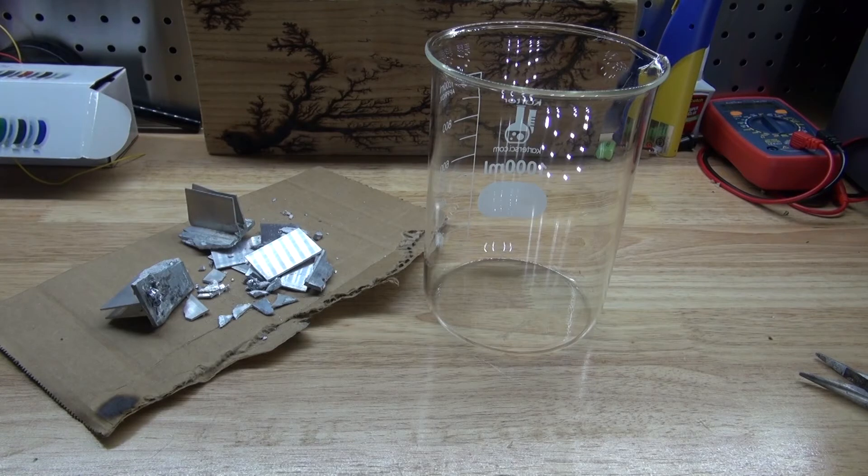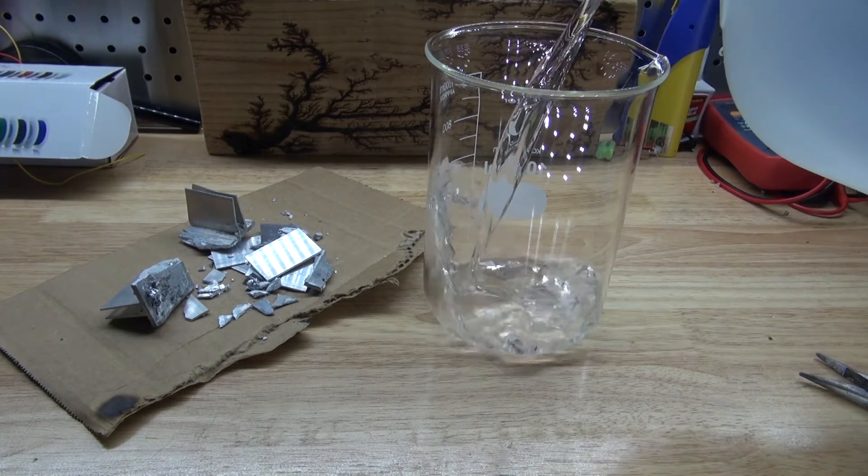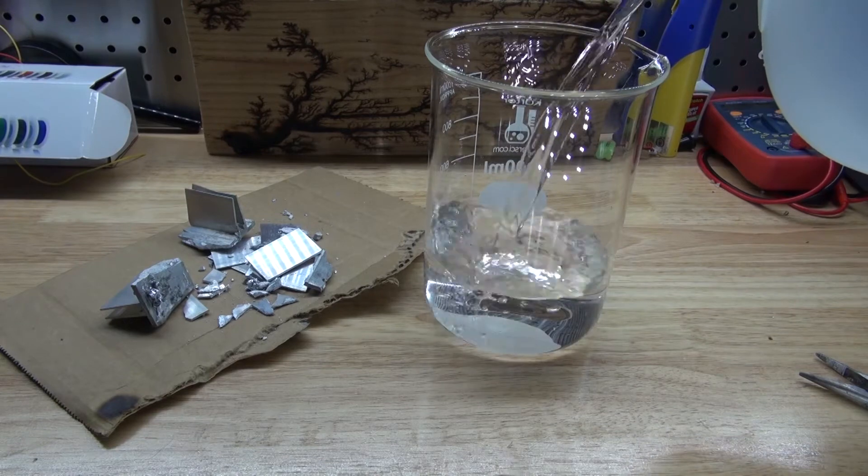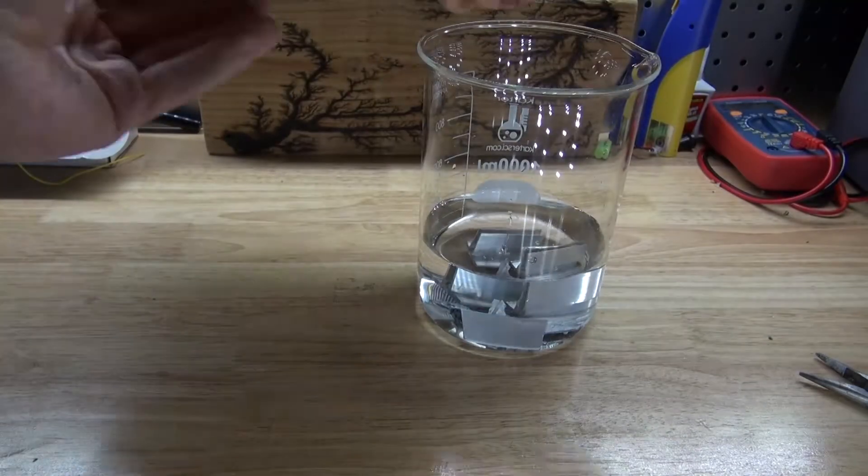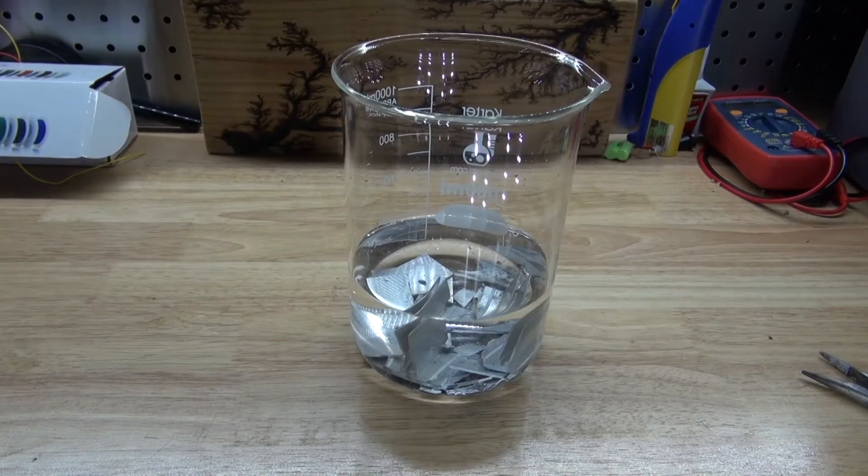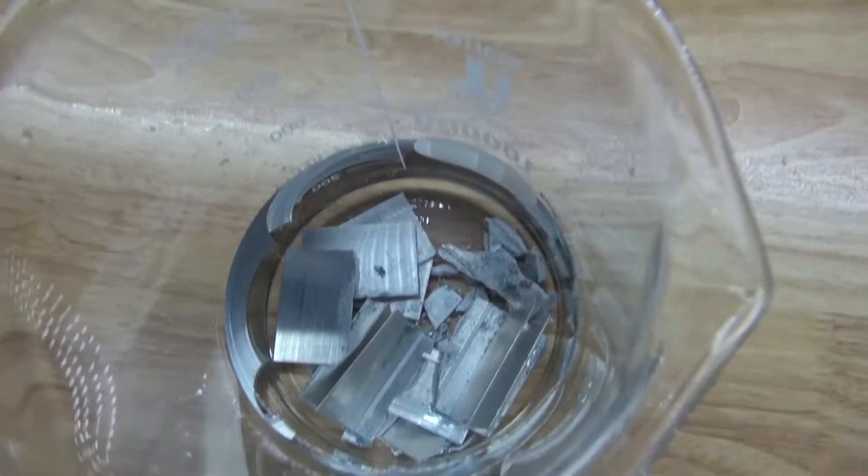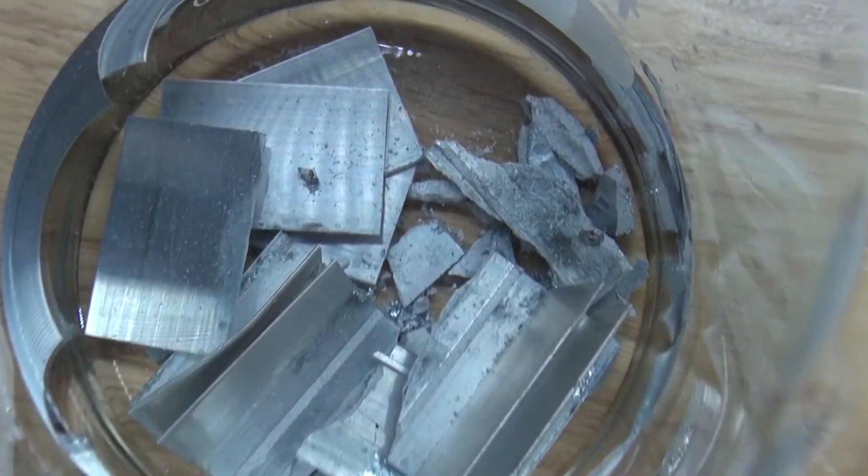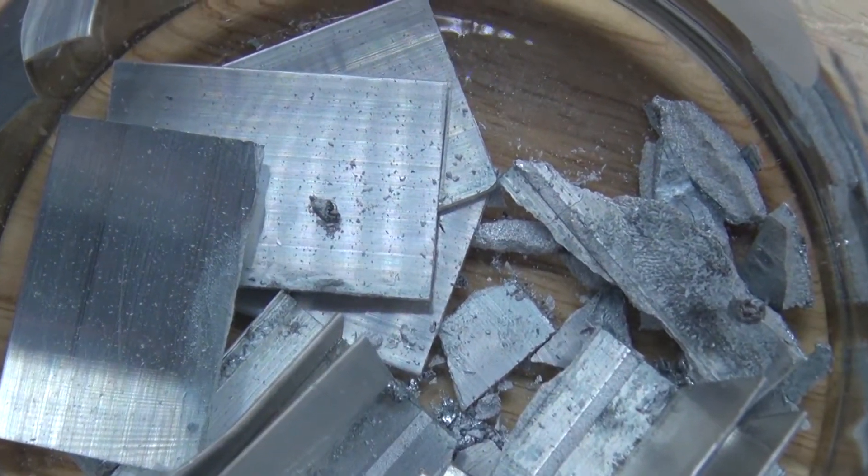So I have right here my beaker, and I'm ready to fill it up with some distilled water. And I'm going to go ahead and place this broken up heatsink inside to react it with the water. And as you can see, I waited about an hour, and there's a little bit of reaction. You can see some hydrogen being formed on top of the aluminum.